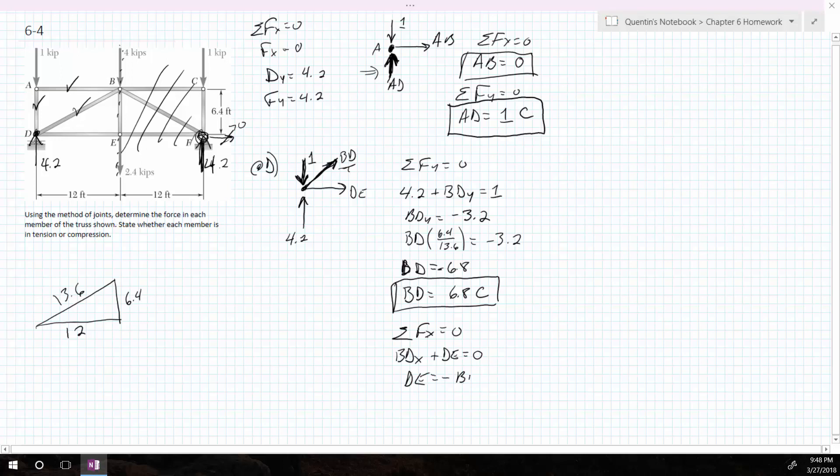So therefore, DE equals minus BD in the X, which is minus. But BD, remember, this is the actual number because we're using that same, we're using the arrow as drawn. And the answer is negative.